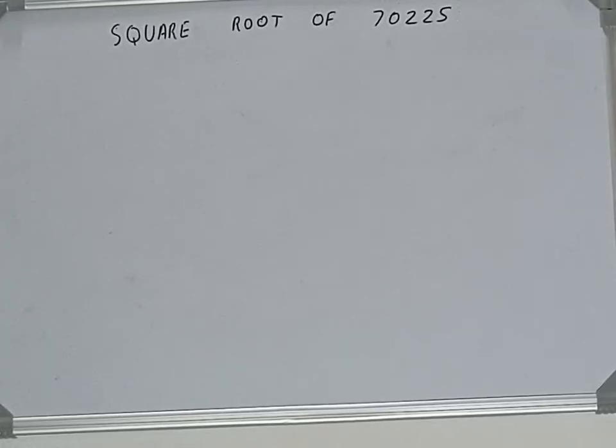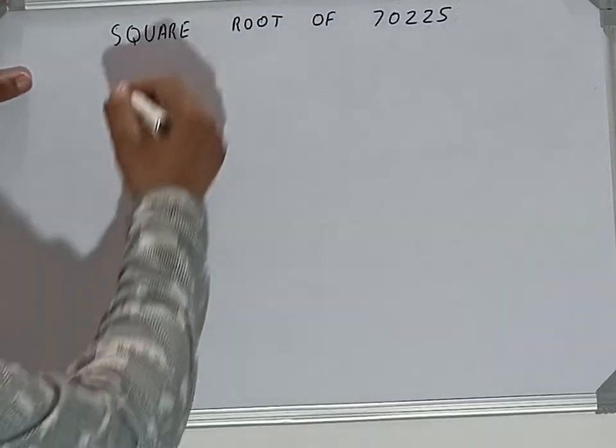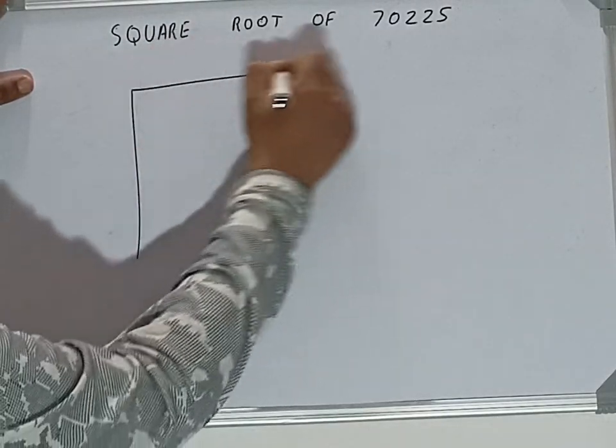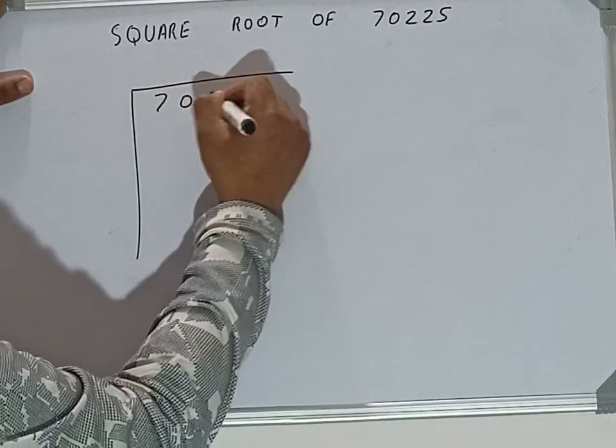Hello friends, and in this video I'll be helping you with the square root of the number 70225. So let's start. First of all, we need to write the number like this: 70225.